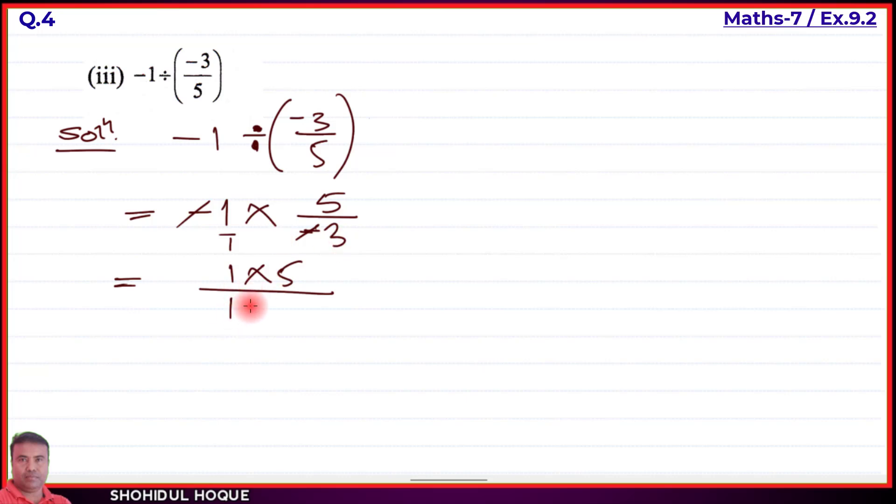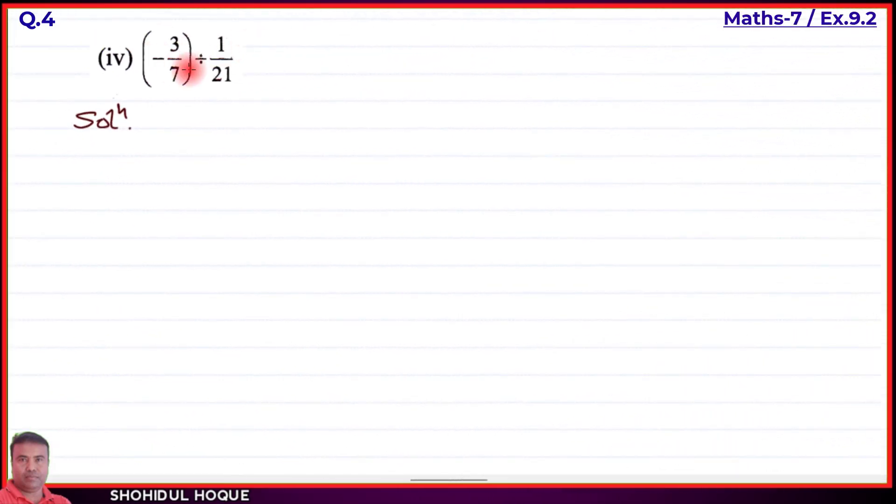This can also be written as a mixed fraction: 5 divided by 3 is 1 with remainder 2, so one and two-thirds. That's the answer for part 3. Now part number 4.